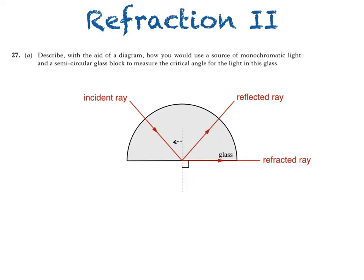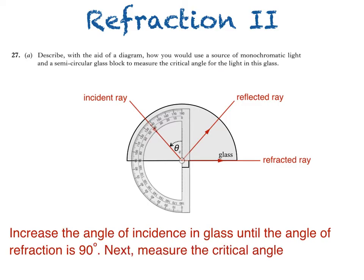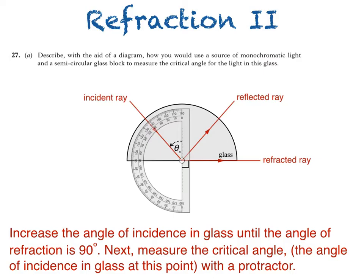You would then measure the angle of incidence in glass which would be equal to the critical angle. So, increase the angle of incidence in glass until the angle of refraction is 90 degrees. Then measure the critical angle with a protractor.